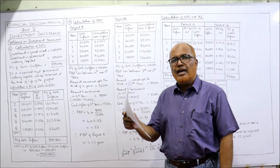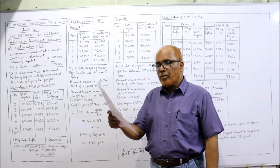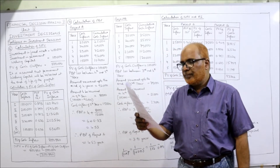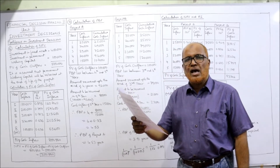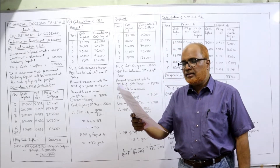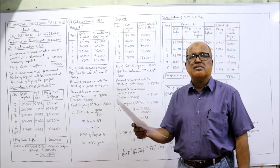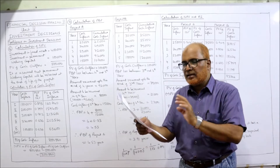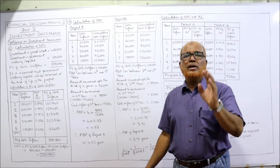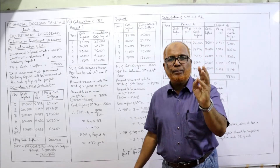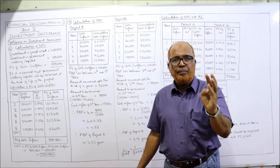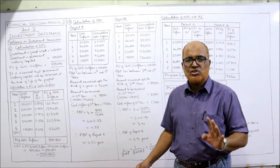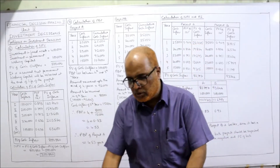On the basis of NPV, profitability index, and payback period, evaluate the projects assuming a 10% discount rate. We are required to calculate PBP, NPV, and PI — three methods applied to both projects.